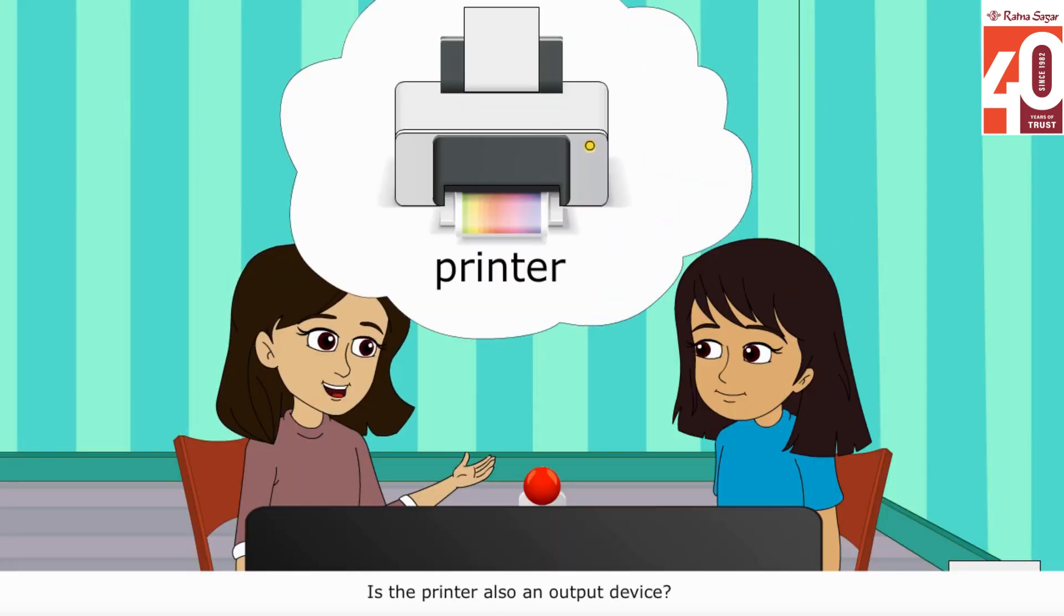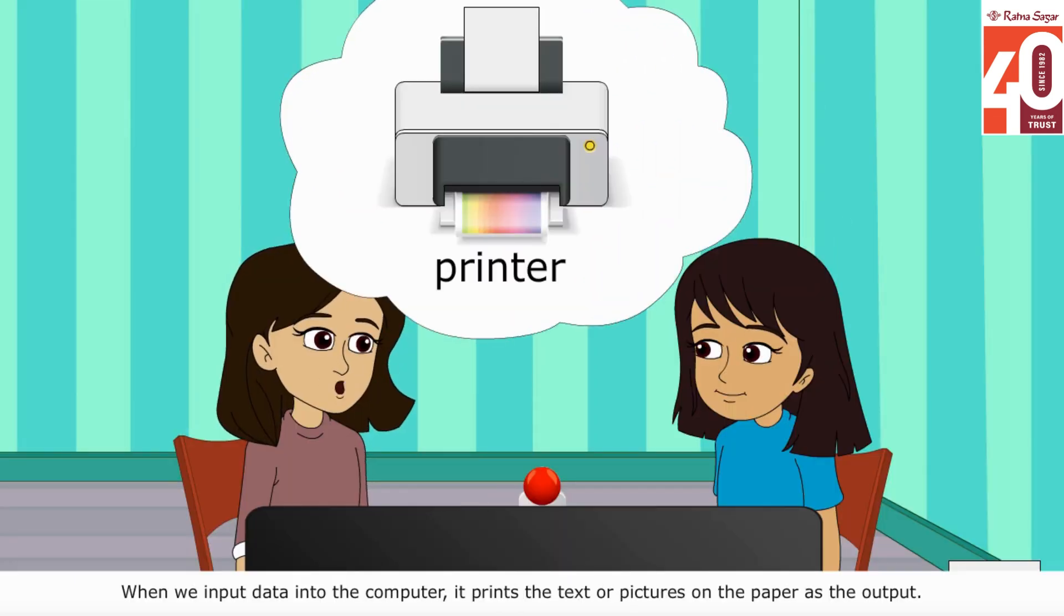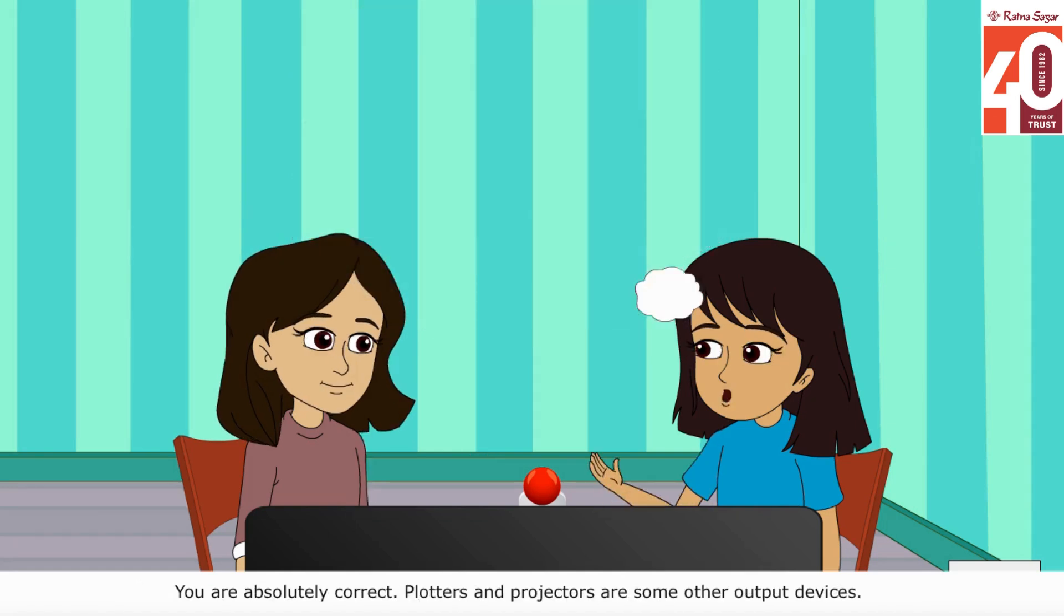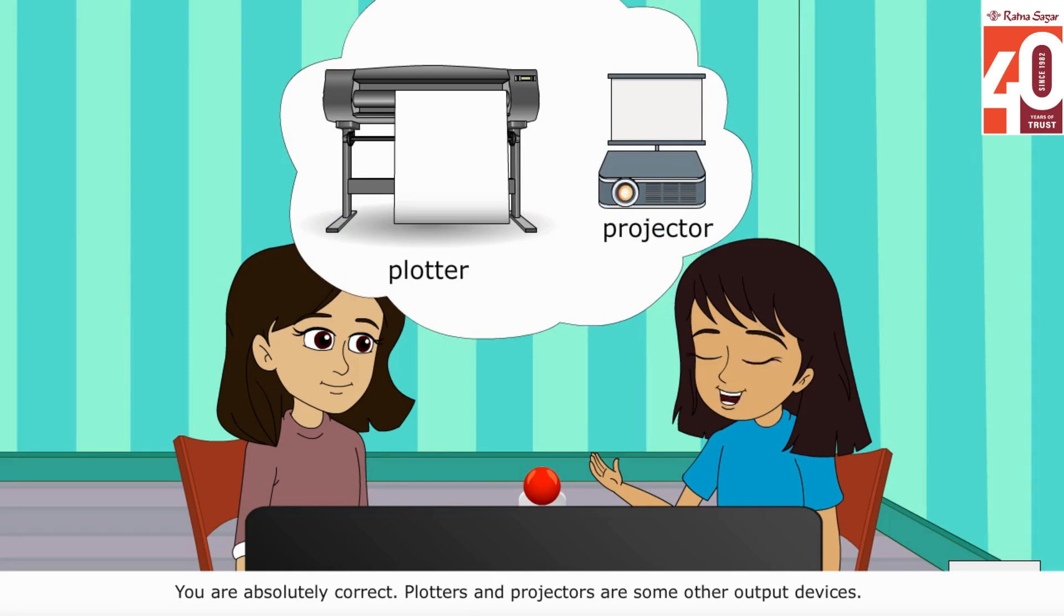Is the printer also an output device? When we input data into the computer, it prints the text or pictures on the paper as the output. You are absolutely correct. Plotters and projectors are some other output devices.